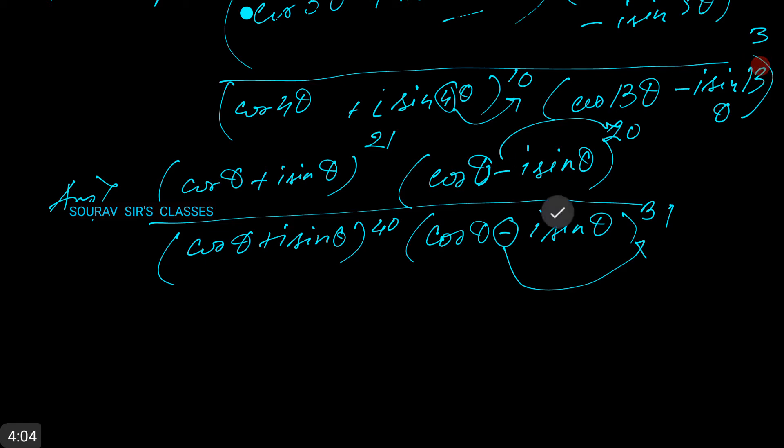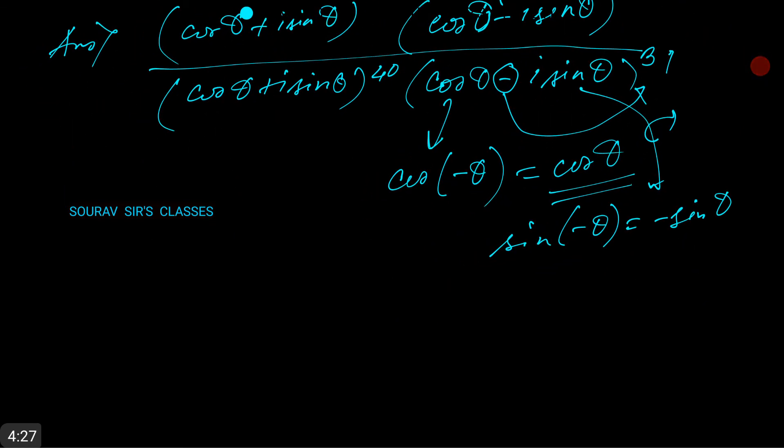This is because cos(-θ) = cos θ, so the cosine part remains unaffected, and the sine part changes since sin(-θ) = -sin θ. We are left with (cos θ + i sin θ).